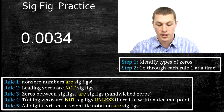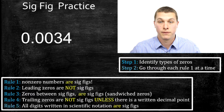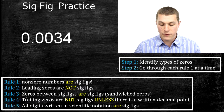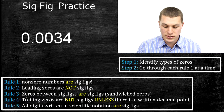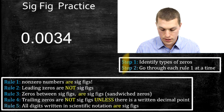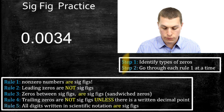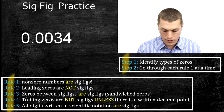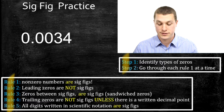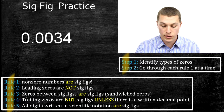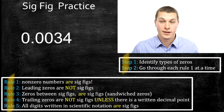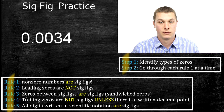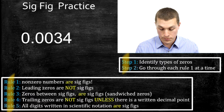If we have our first number here, 0.0034, how do we count the sig figs? I've divided this up into two steps, and there are all the rules we need at the bottom. So we're going to combine these steps and rules to count sig figs. The first step — basically the only step — is identifying what types of zeros we have in our number.